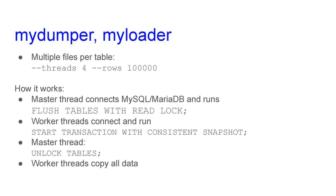MyDumper uses a nice trick: when called, it starts a master thread that connects to MySQL and runs FLUSH TABLES WITH READ LOCK, locking all writes briefly. Then the worker threads connect and run START TRANSACTION WITH CONSISTENT SNAPSHOT, obtaining a view of the data. Then the master thread releases the lock — applications can work again. This happens in just a fraction of a second — though it can still be a problem if your database is write-intensive. After the lock is released, worker threads copy all data. Note: if only one thread crashes, the whole backup will be inconsistent.